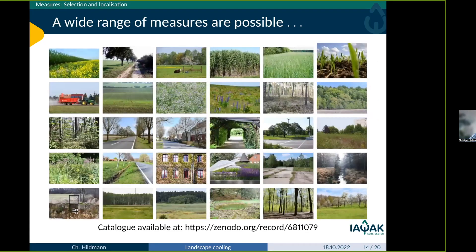There is a wide range of possible measures. We collected about 30 measures suitable for the conditions in our district, which can be downloaded from Zenodo — all documented. The measures may look very different, but the question is always the same: how can more water be retained on-site, on the surface, so that it can later be evaporated again by the vegetation?